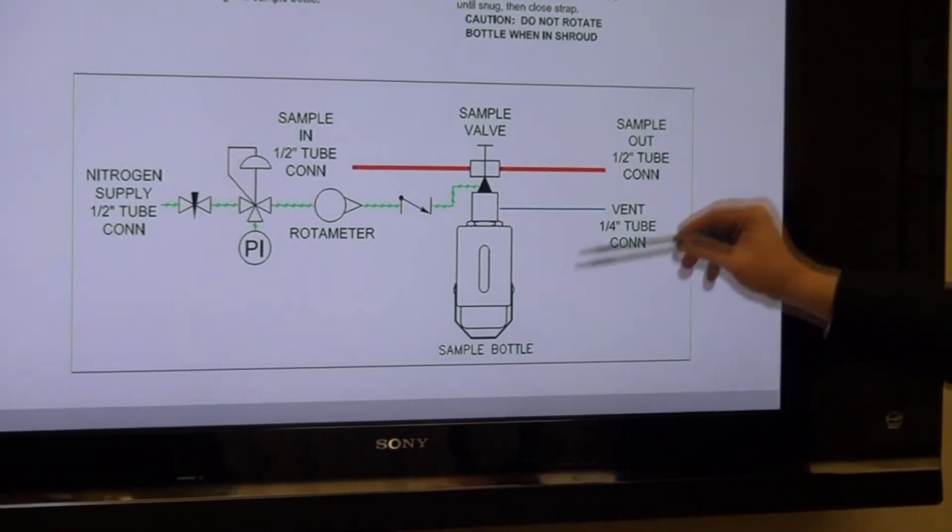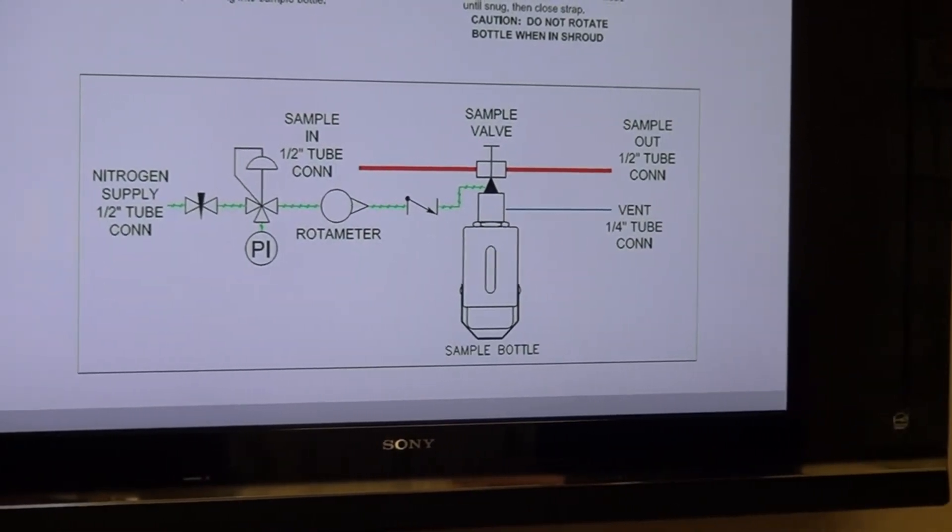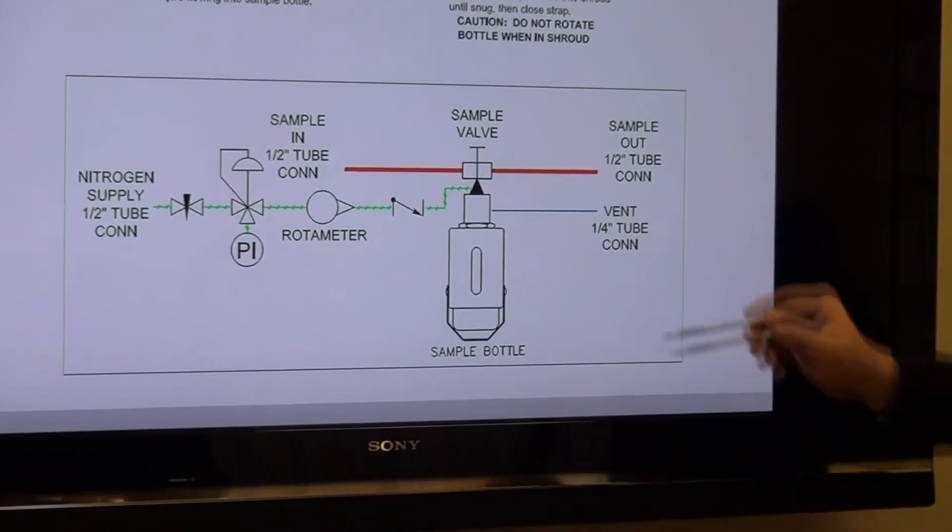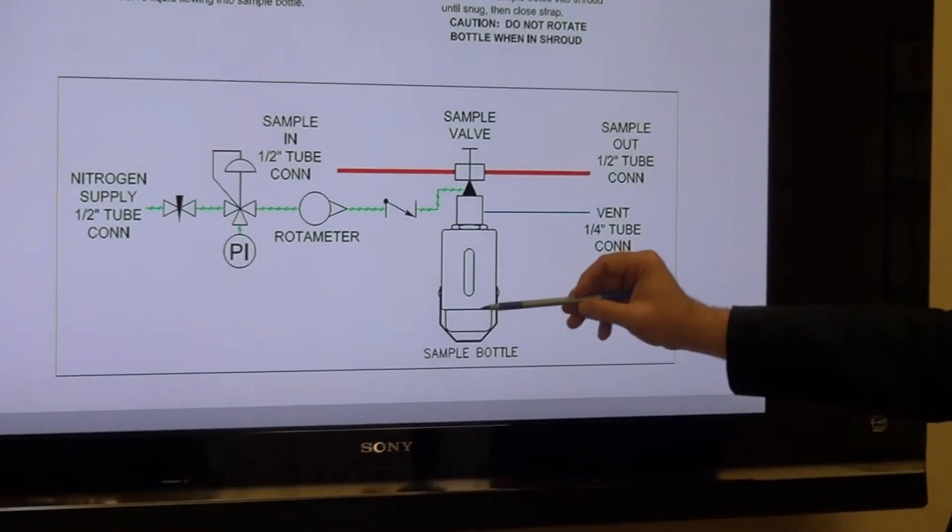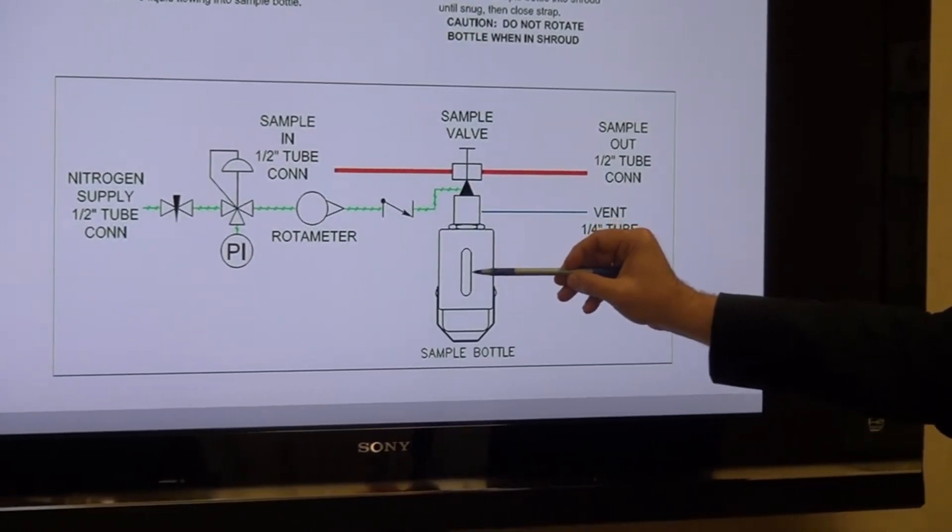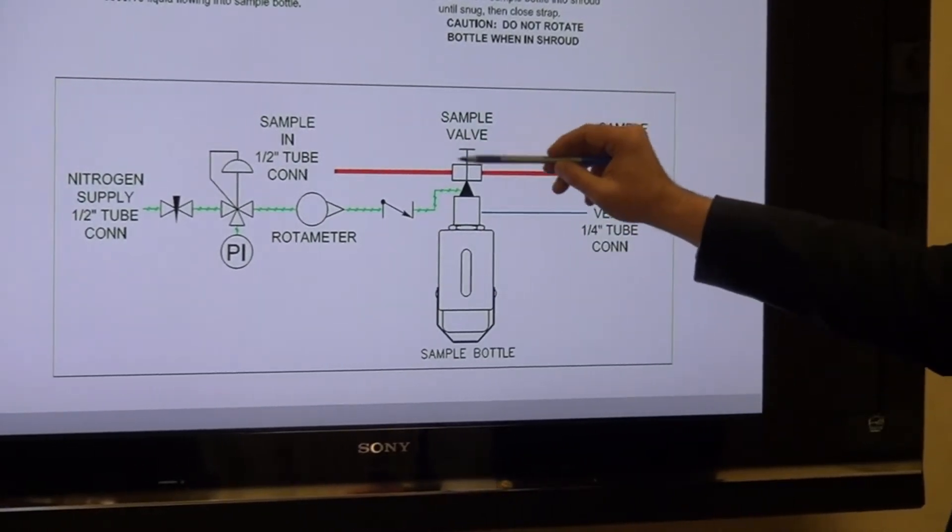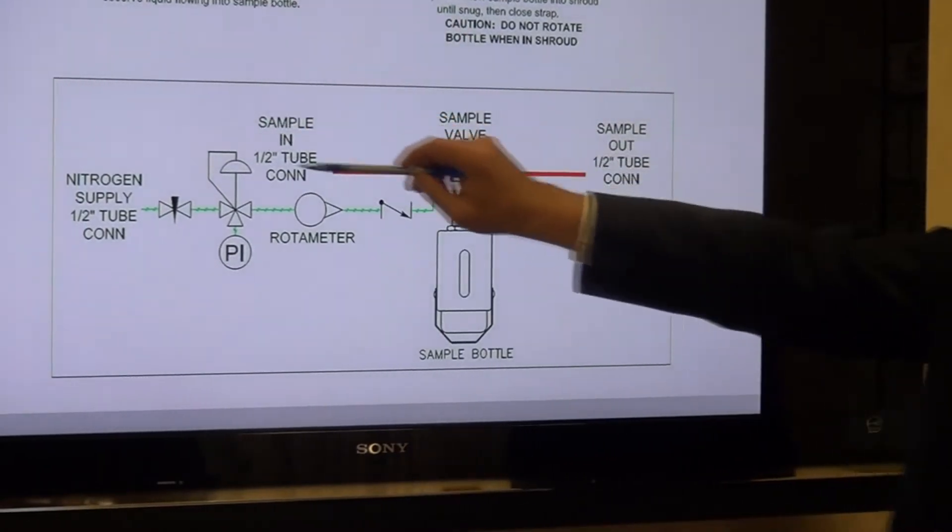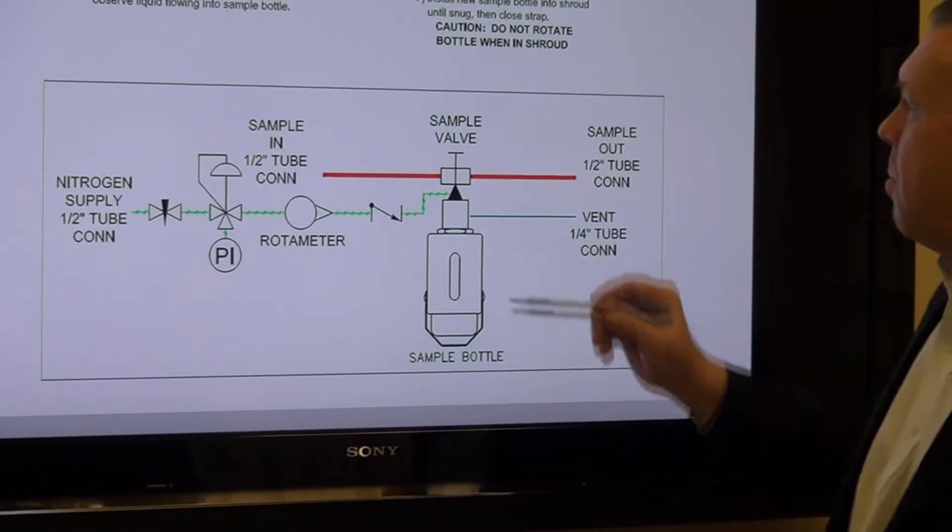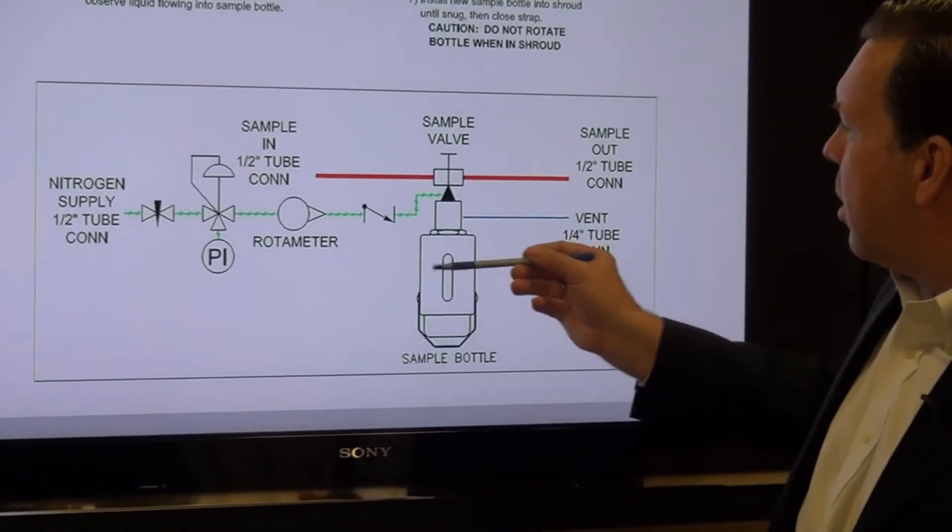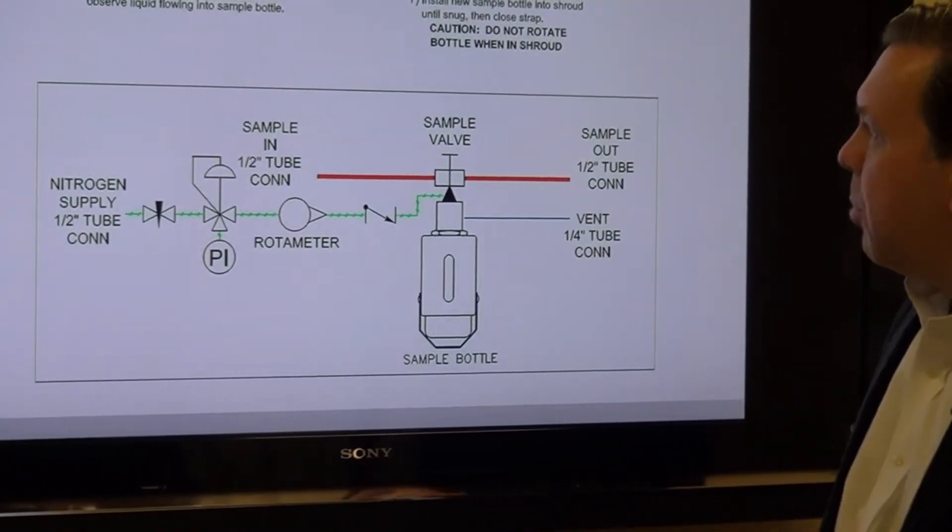We can also provide some accommodation for facilities that do not have a flare connection available, but most commonly that's going to be tied to the flare line. When the operator observes that they have achieved the desired amount of sample, then they'll close that valve. We continue to flow through the system—always a representative sample—and now we have collected our sample in the bottle.